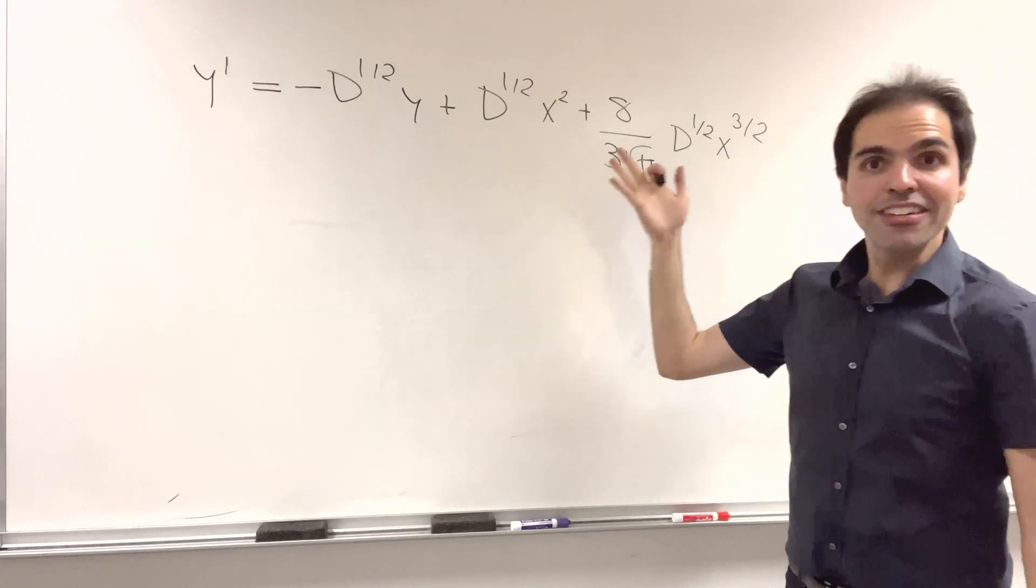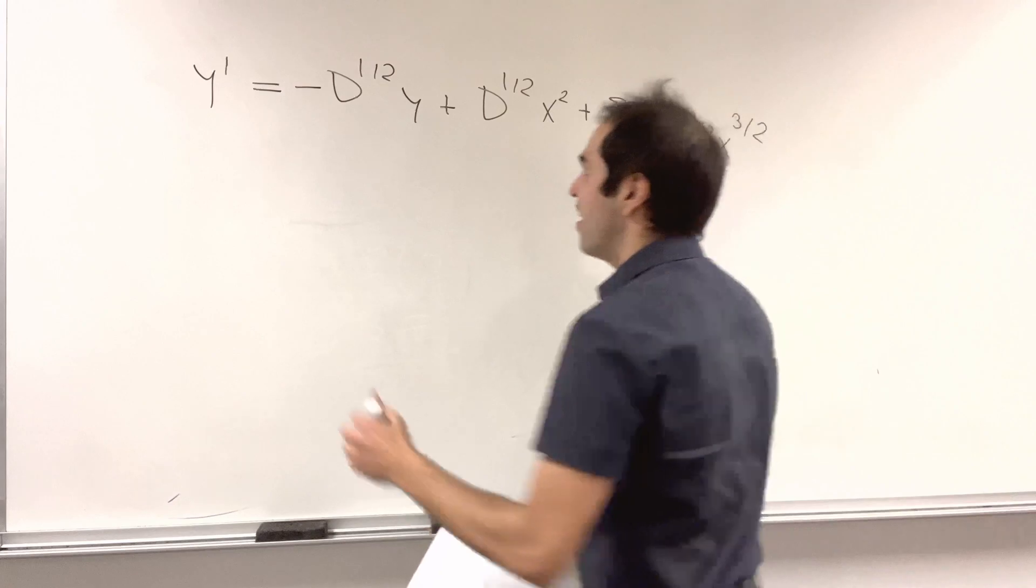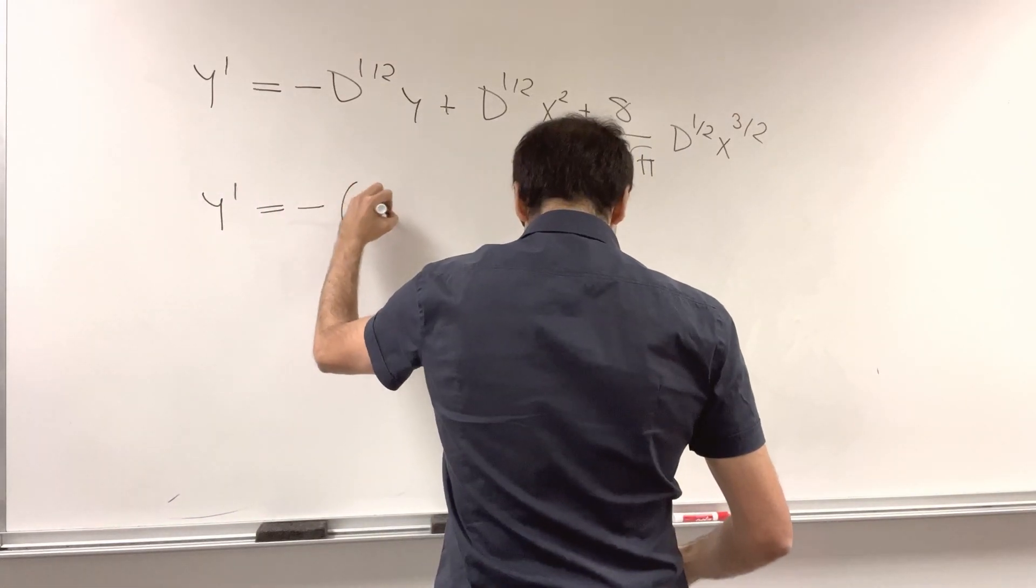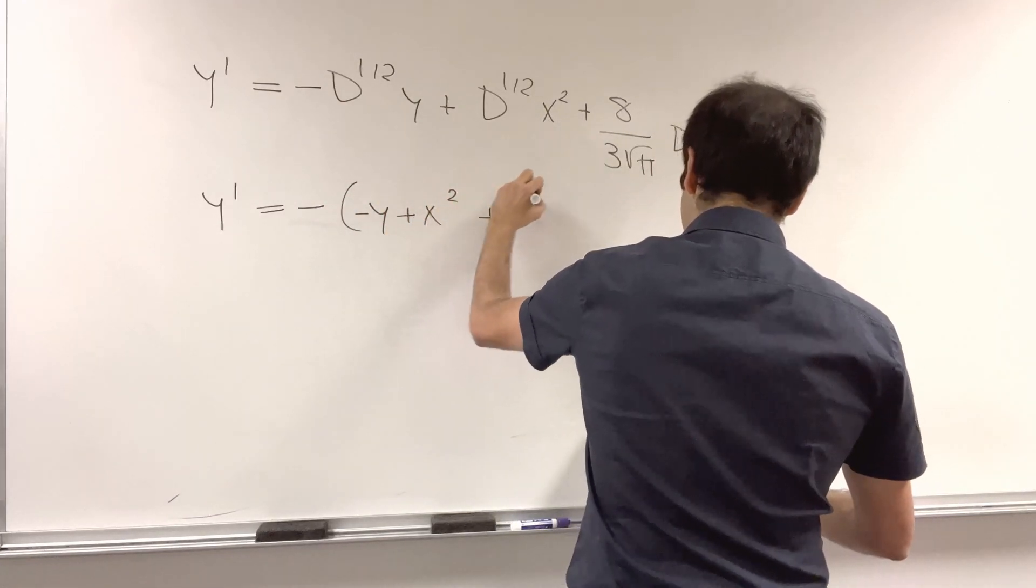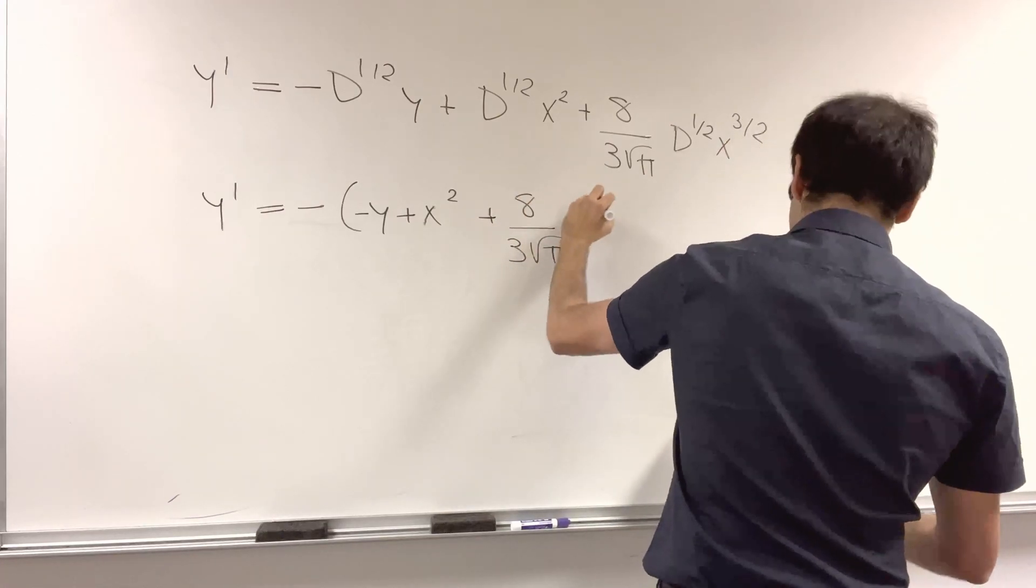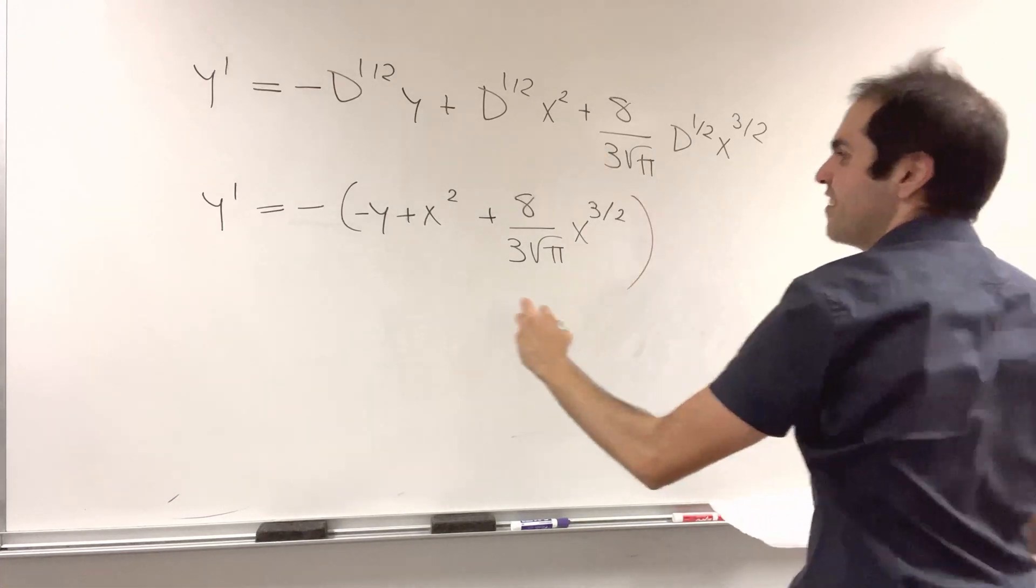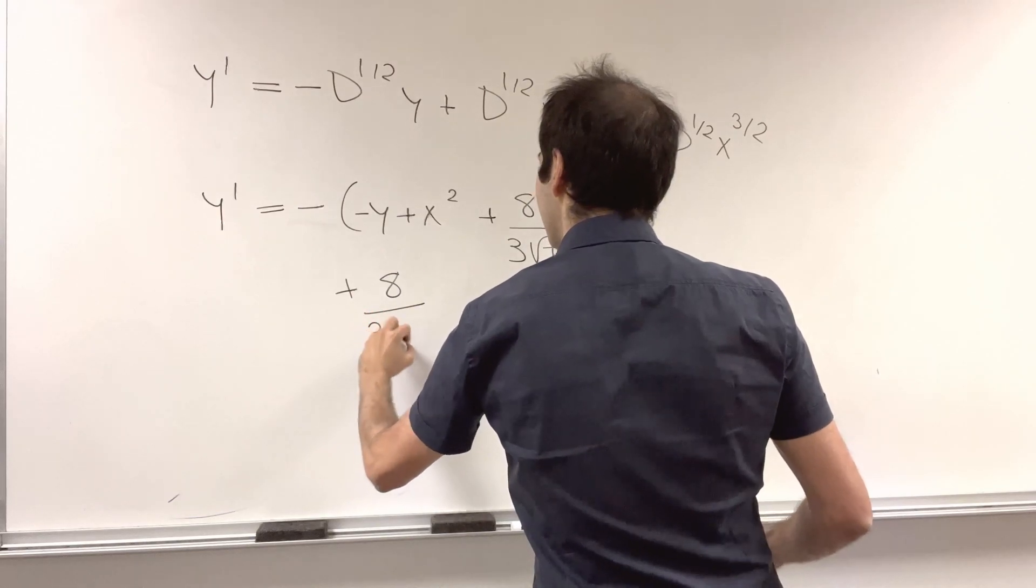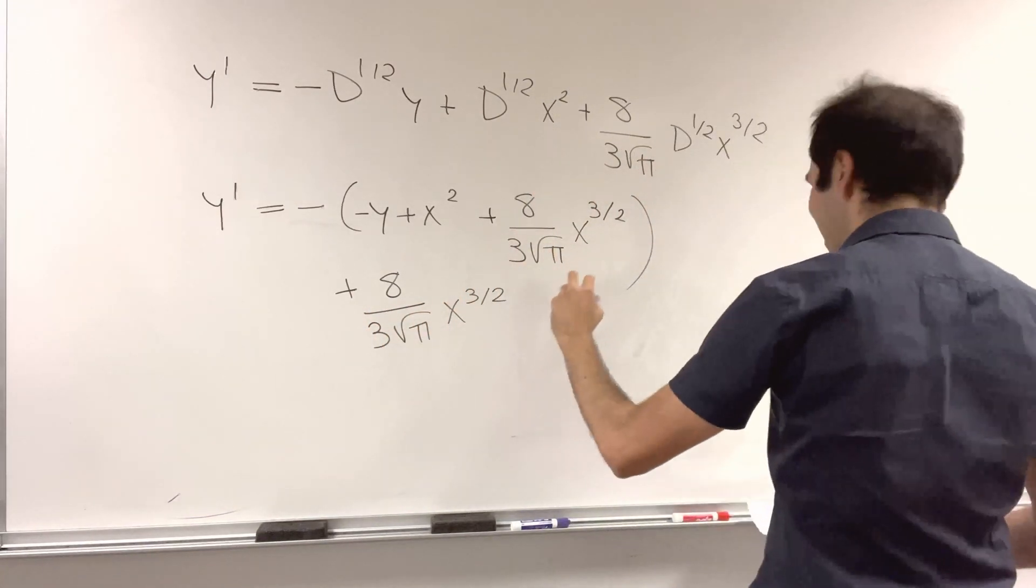Again, that was our differentiated equation. And if we now plug in all the terms, we get y' is minus, let's see, minus y plus x² plus 8 over 3√π x to the 3/2. Now, the half derivative of x², we calculated it to be 8 over 3√π x to the 3/2. And finally,